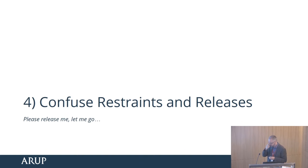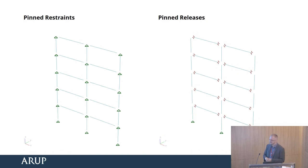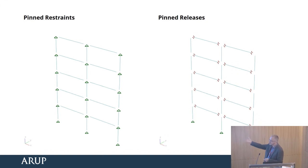A rather surprising error I sometimes see is when engineers get confused between restraints and releases. Both restraints and releases do begin with R, and they're both to do with pinning. A question goes: I've put pinned restraints on the ends of all my beams — why am I getting no load in my columns? It could be because you put pinned restraints on all the nodes. Don't get confused between these two — they're really very different.